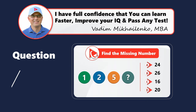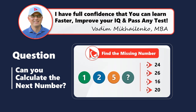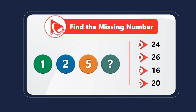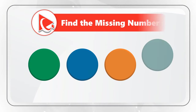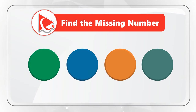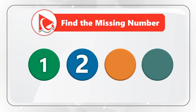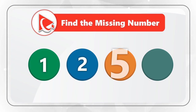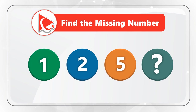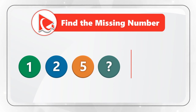Here's a very interesting question where you need to calculate the missing number. You are presented with four circles of different colors. The first circle has number 1, the second has number 2, and the third has number 5.